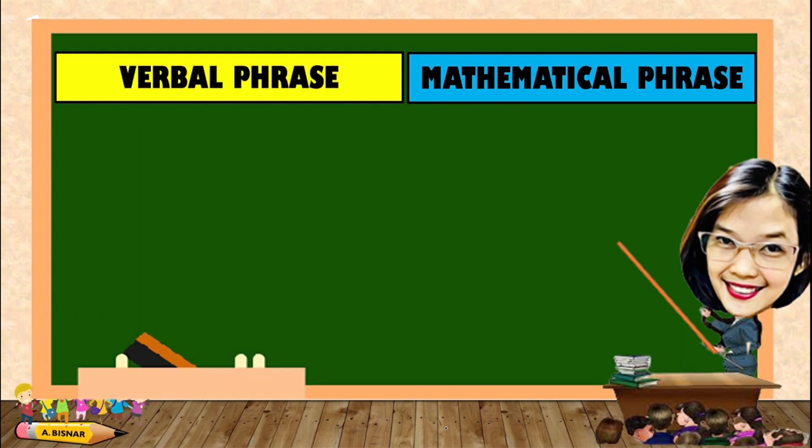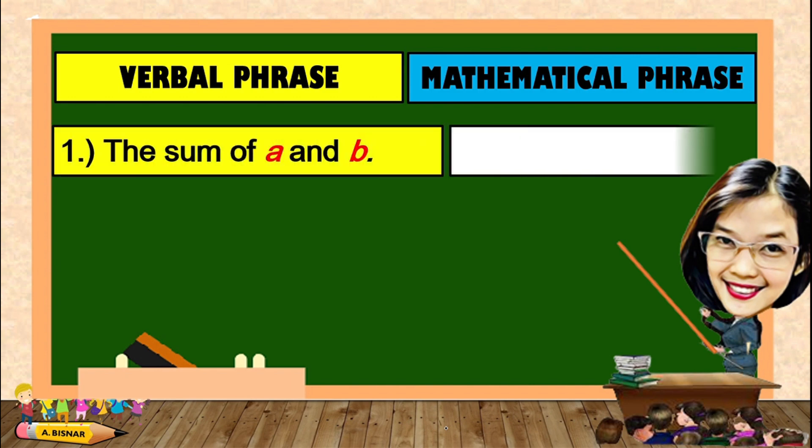Now let us use some of those. Let's translate the verbal phrase into mathematical phrase. For number 1, the sum of A and B. Since the word is the sum, it means addition. The sum of A and B.